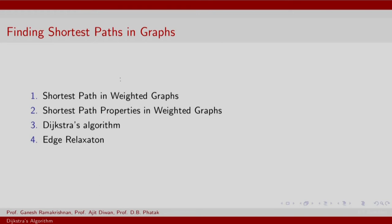We will discuss shortest path in graphs that are weighted and the underlying properties of these algorithms. In particular, Dijkstra's algorithm makes use of a property called the optimal substructure property, and finally we discuss the procedure of edge relaxation.